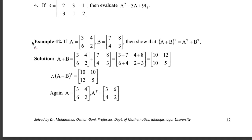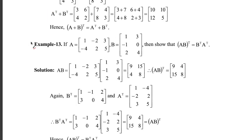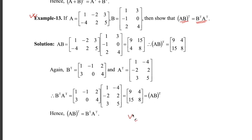For the transpose matrix examples: in example 2, first add A+B then calculate the transpose. Here, first calculate A transpose and B transpose separately, then add them. In another example, first multiply A and B then take its transpose; and also calculate B transpose multiplied by A transpose. You can check the solutions.